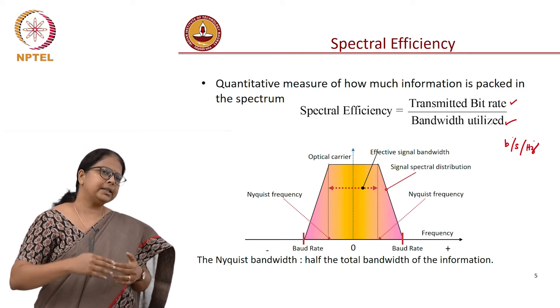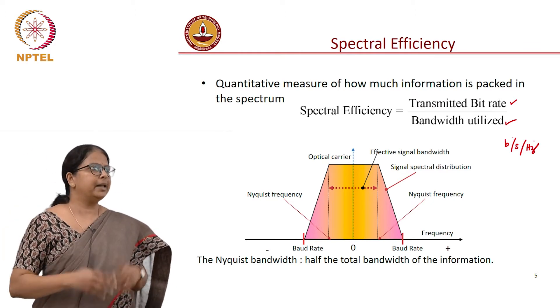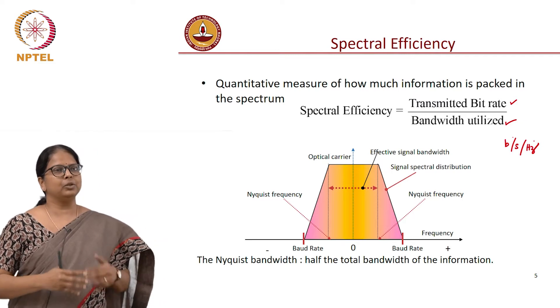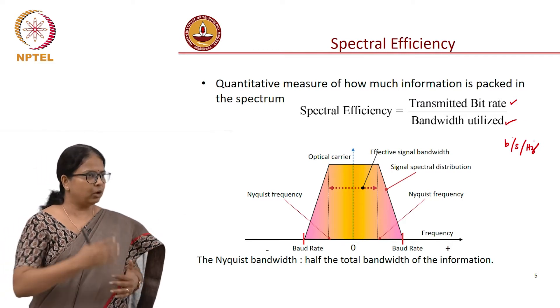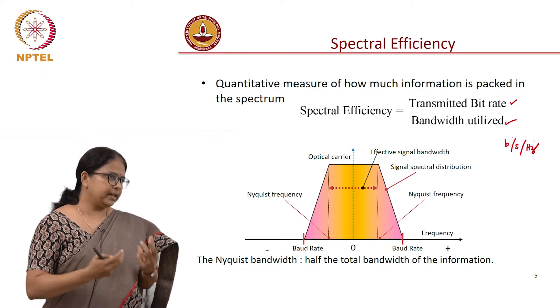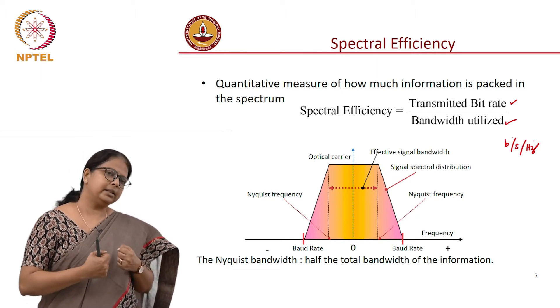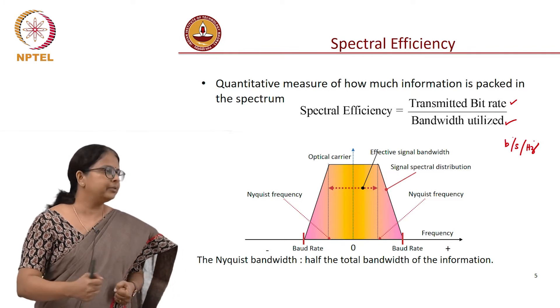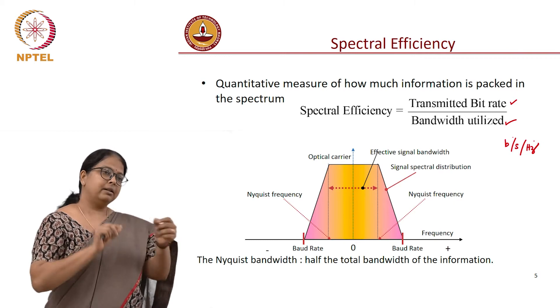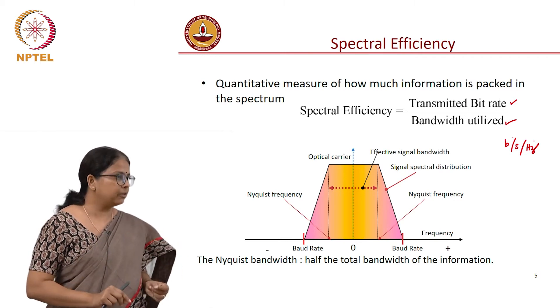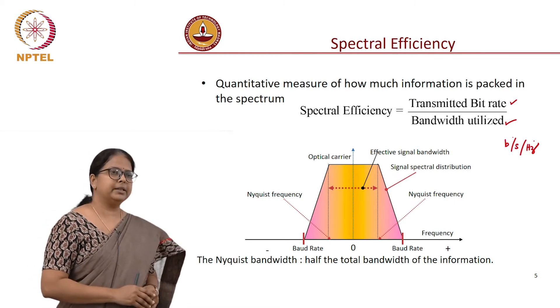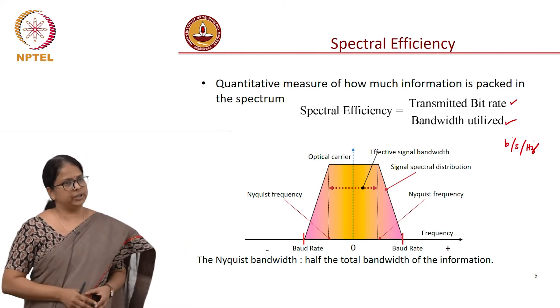But the question is, can I go on increasing this? Can I think of a system where the spectral efficiency is 10, 20, 50, 100? What is the limit on spectral efficiency? It turns out that there is a theoretical fundamental limit for spectral efficiency. However hard you try, however complex your modulation format is, your spectral efficiency is fundamentally limited by signal-to-noise ratio.